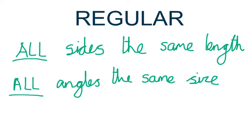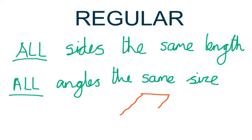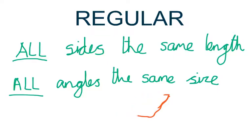For a shape to be regular, all the sides are the same length and all the angles are the same size — both of those things, it has to be both. There is an example called a rhombus where all four sides are the same length, but the angles are different — the opposite angles are equal, but they're not the same as the ones next to them. So although the sides are the same length, it's irregular. It's very important that you say both the sides are the same length and the angles are the same size on a regular shape.